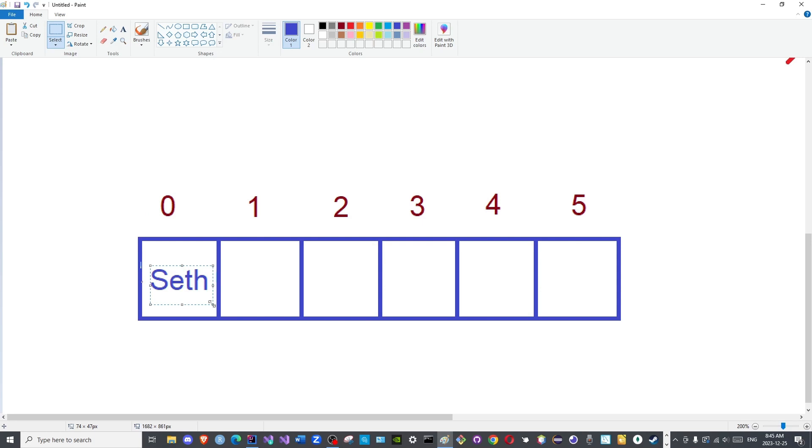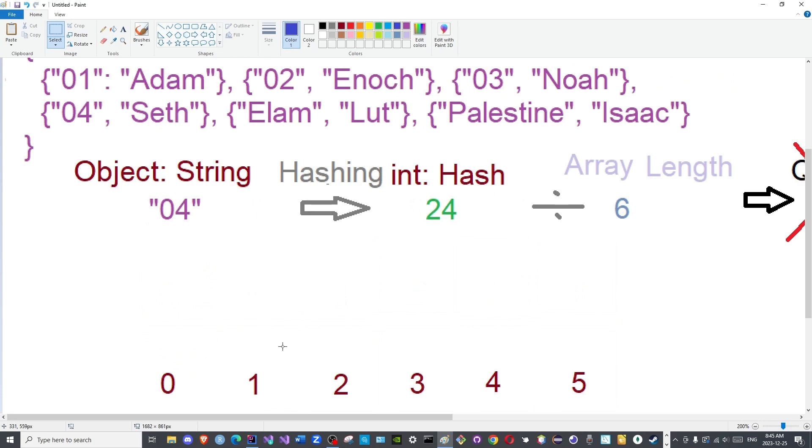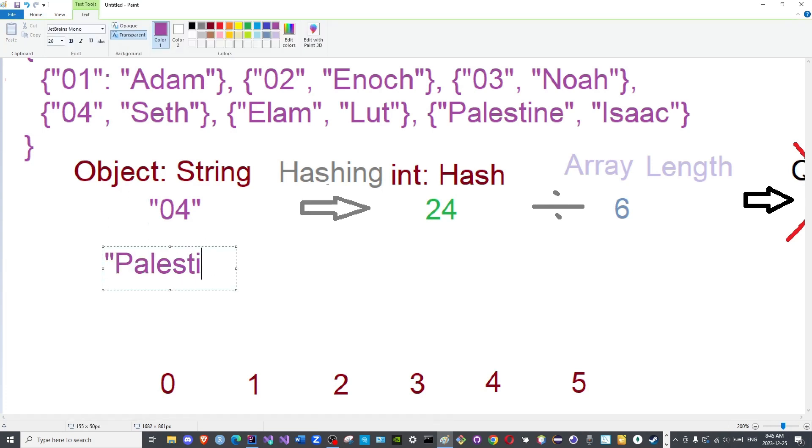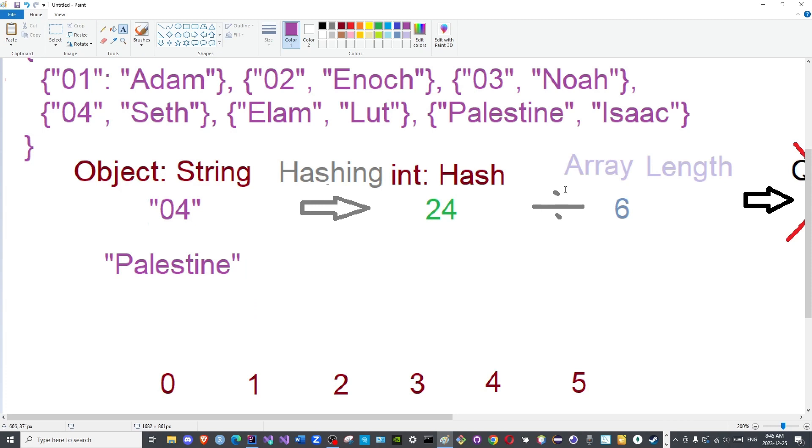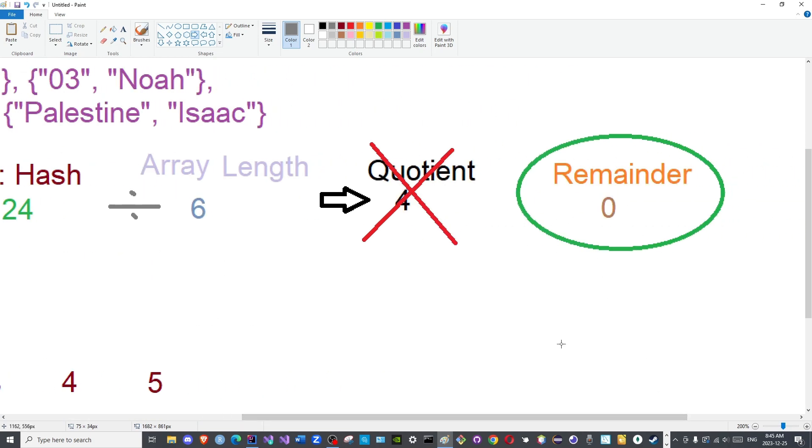That is why hash tables are quickest with respect to data retrieval or searching to be precise. Let us cover another example. Let us use this one. So here we will use the identifier Palestine to be able to search for the name Isaac. So again, it will be hashed. And you probably know why I chose 24, because I wanted the remainder to be zero.